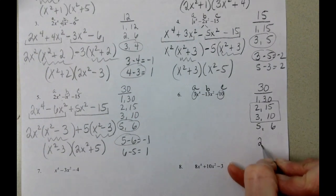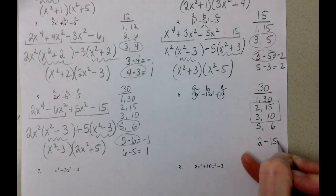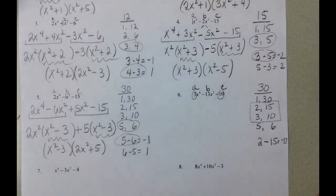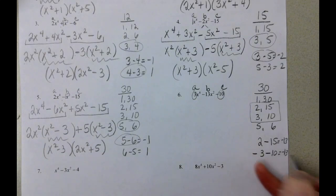We can get 2 minus 15, which is going to give us negative 13. Or negative 3 minus 10 is going to give us negative 13.